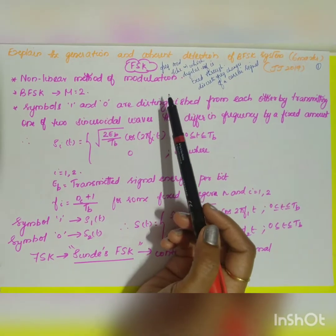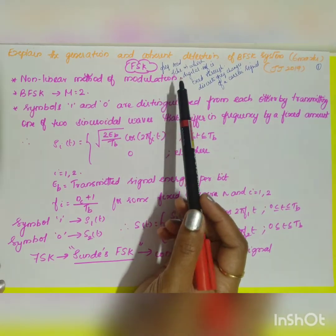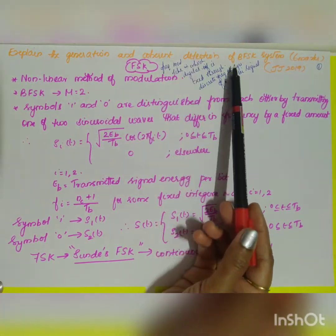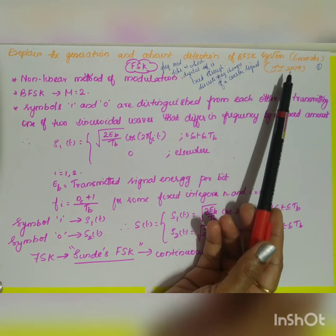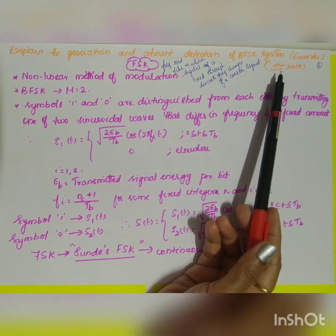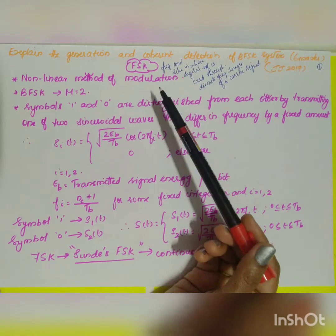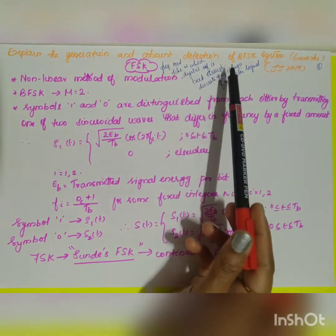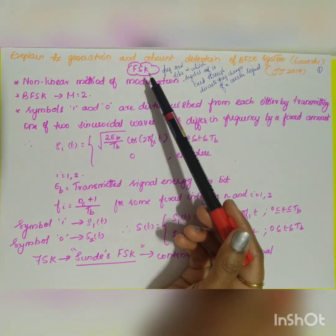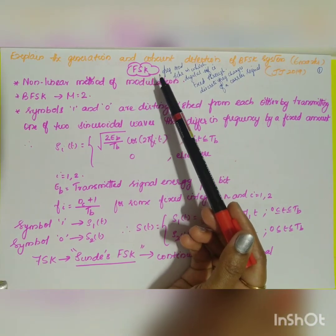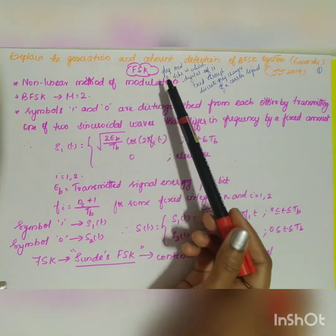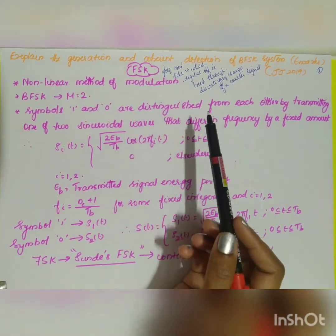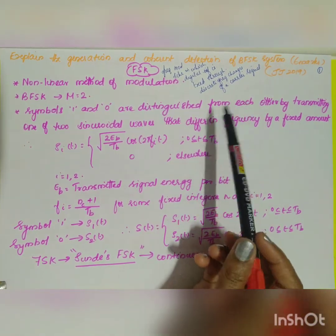The next topic in the third module is Frequency Shift Keying (FSK). A university question from June/July 2019 asks to explain the generation and coherent detection of a BFSK system for six marks. In this video we will see the signal space representation, generation, and detection of the FSK signal. FSK means the frequency of the carrier is varied — it is a frequency modulation scheme in which digital information is transmitted through discrete frequency changes of a carrier signal.